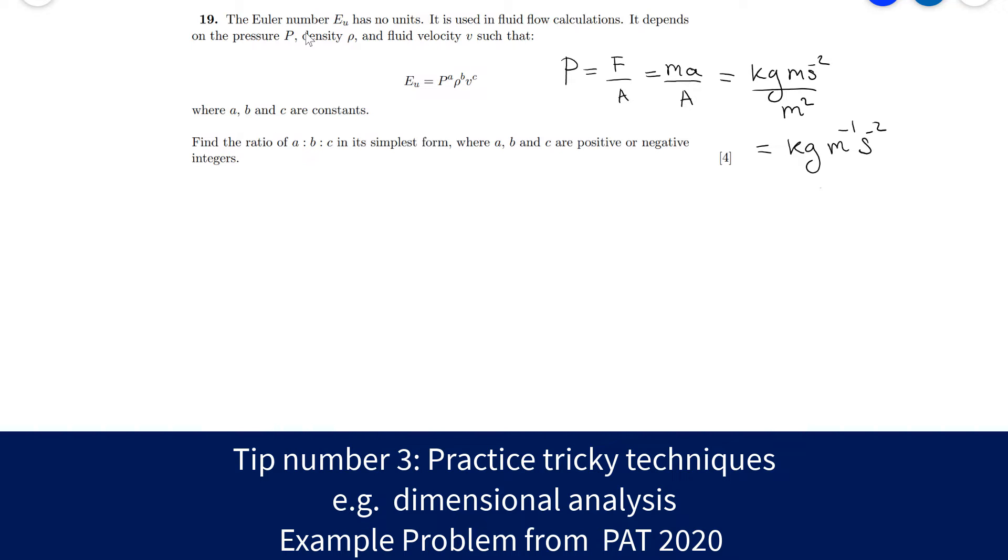So this question about the Euler number which has no units. So this quantity over here on the left has no units like so. Often used in fluid flow calculations, depends on the pressure, density and the fluid velocity such that. And we're given an equation. What I've written over here on the side is just the units of pressure. So I've just said that pressure is force over area, mass times acceleration divided by the area. And I have the units of pressure to be kg m to the power of minus 1 s to the power of minus 2. Now this question is asking us about the ratio of A to B to C in its simplest forms. Well, let me show you an interesting trick that we can always use.